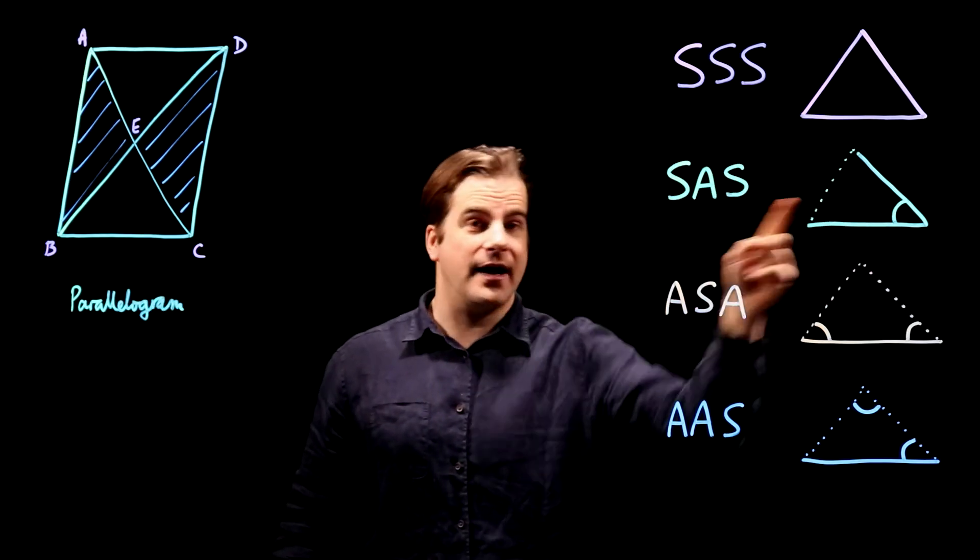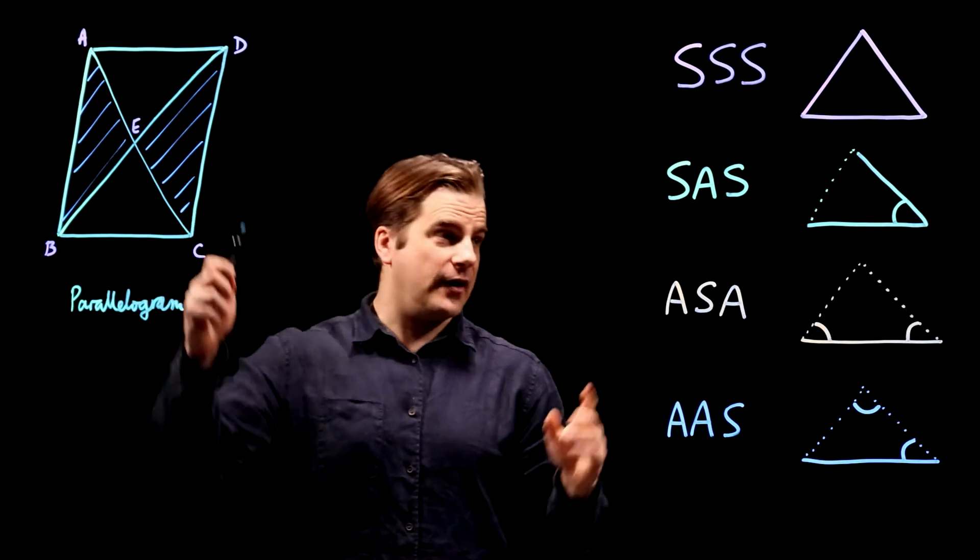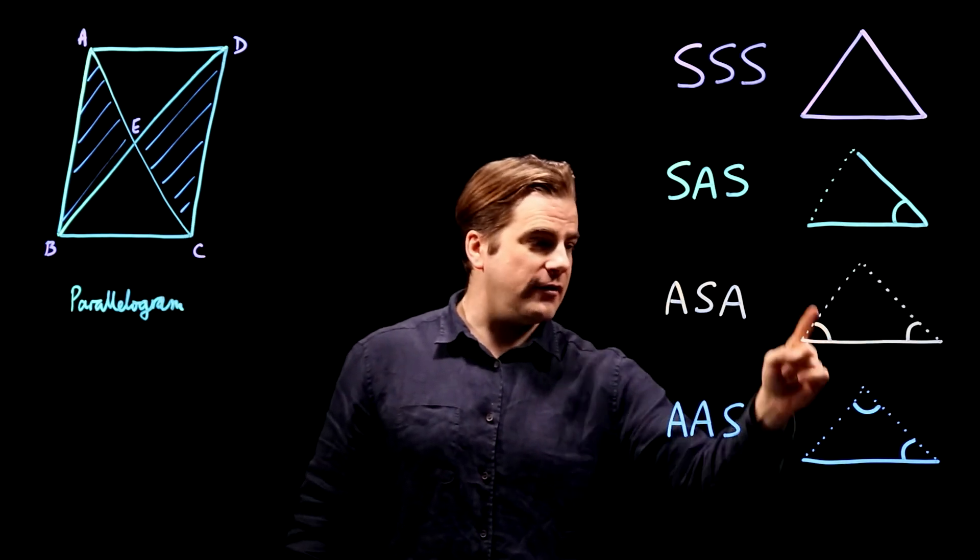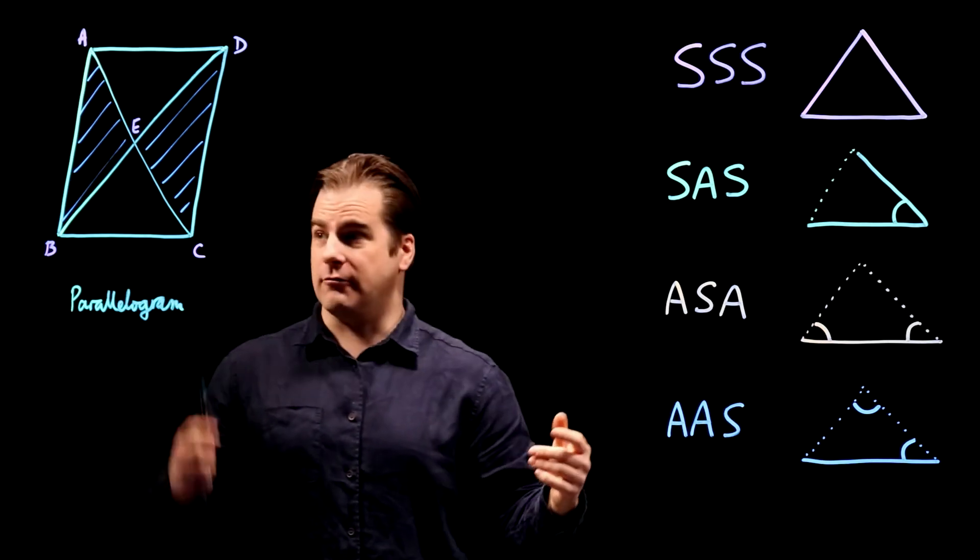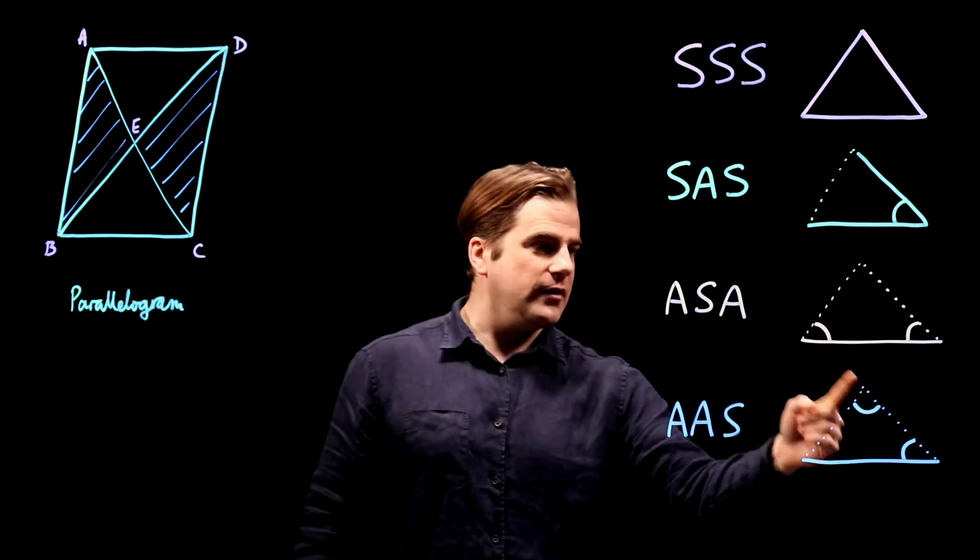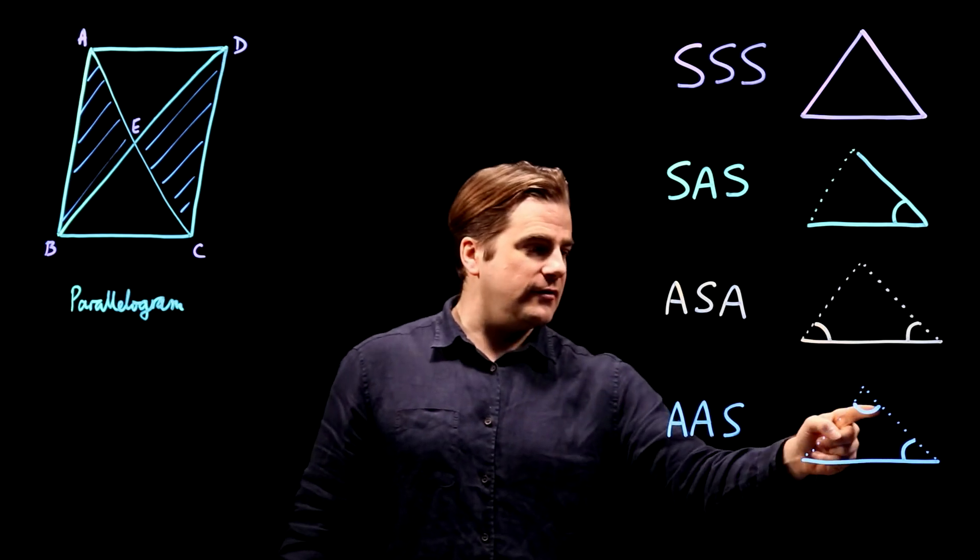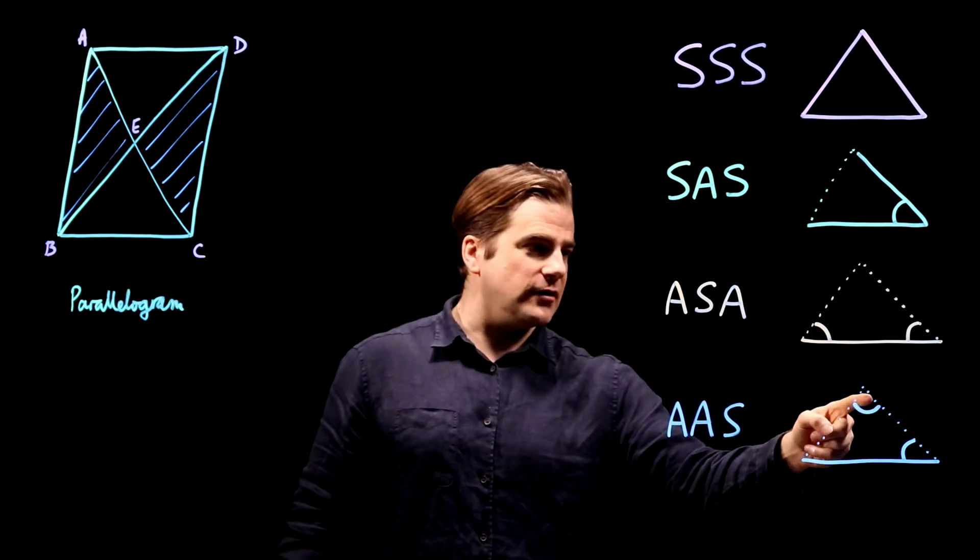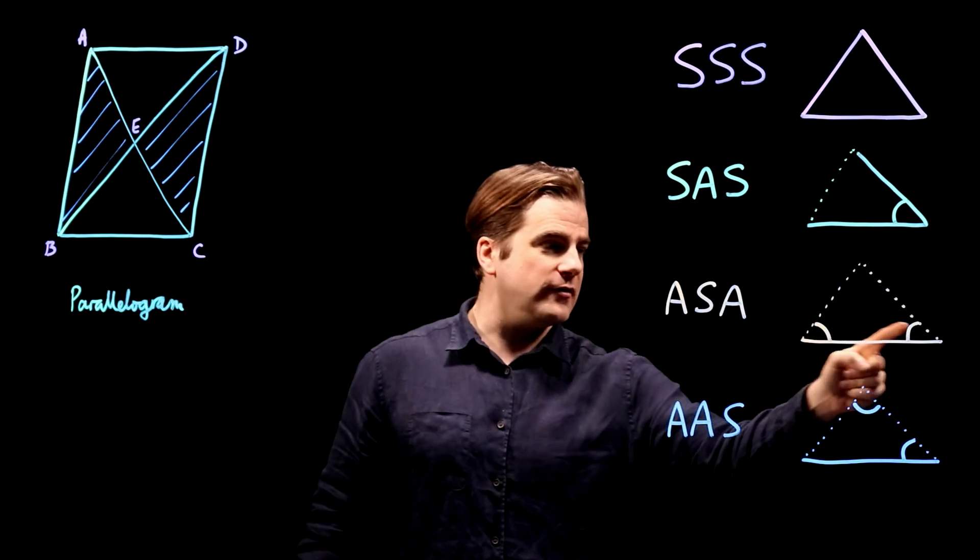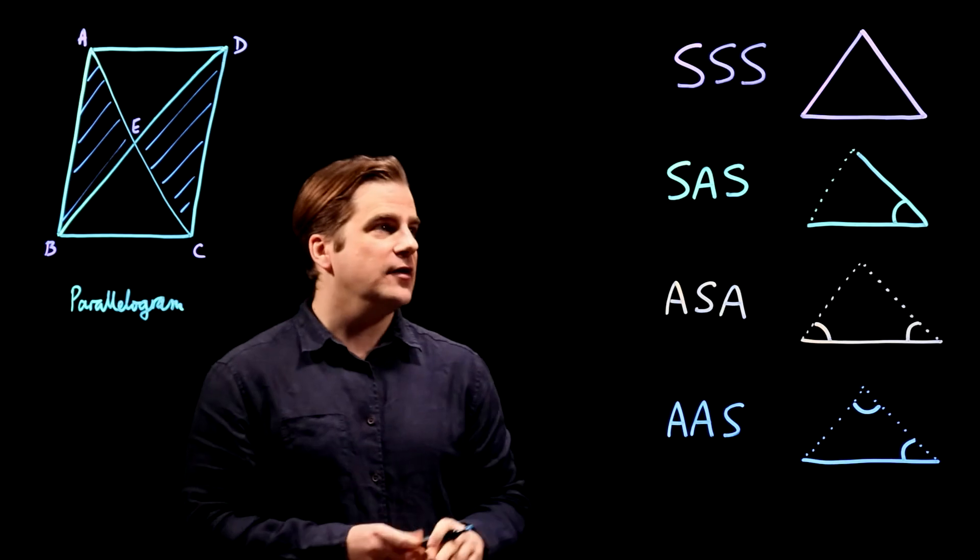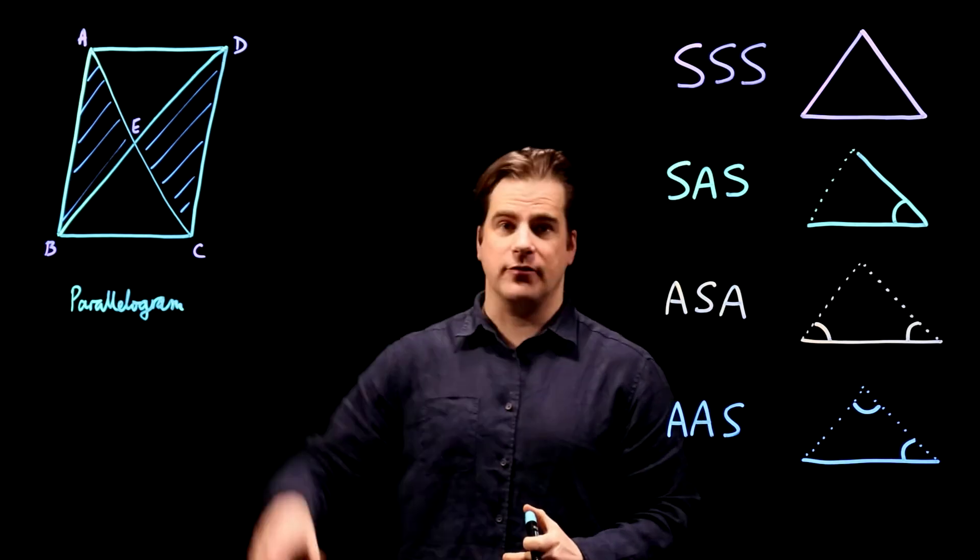Or if two sides are the same and the angle between them, then they're congruent. Or if one side is the same and any other two angles, then they're also congruent. So angle, side, angle, or angle, angle, side. The angle doesn't have to be touching the side that we know. It can be between two sides that we don't know. Any one of those four, and we've proved congruency.